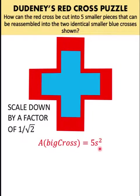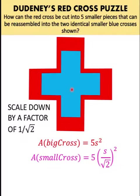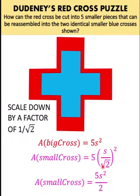So if the area of the big cross is 5S squared, then the area of the small blue cross must be 5 times S replaced by 1 over square root of 2 times S, which is S over square root of 2, and we square. Simplifying, this gives us 5 times S squared over 2, because square root of 2 squared is equal to 2.